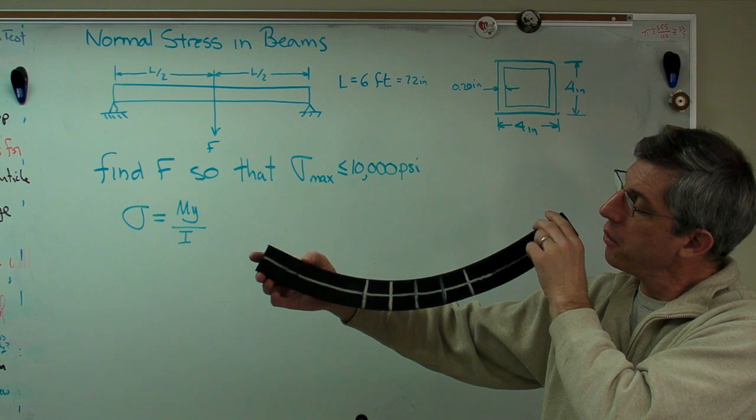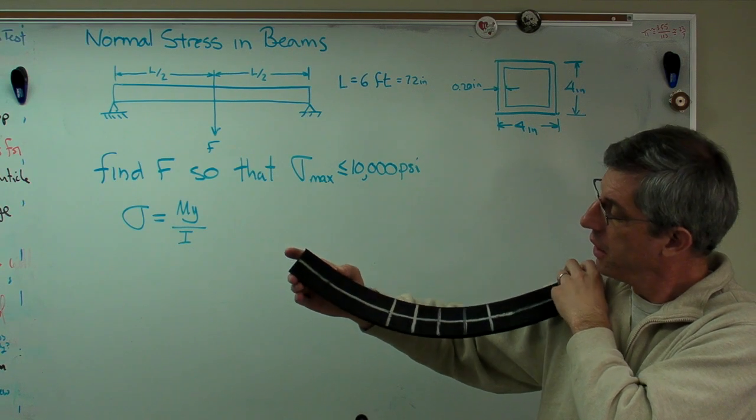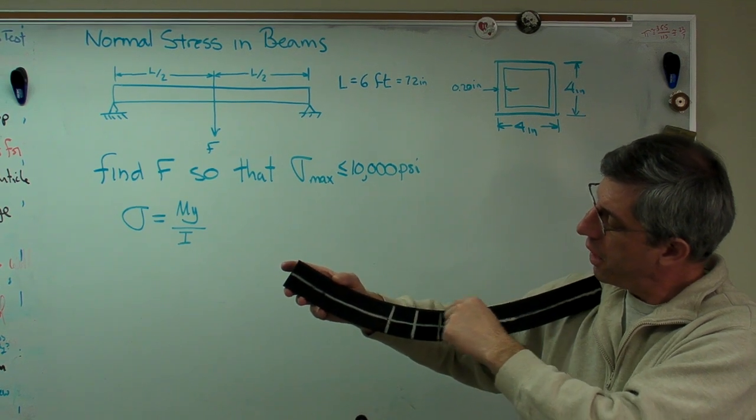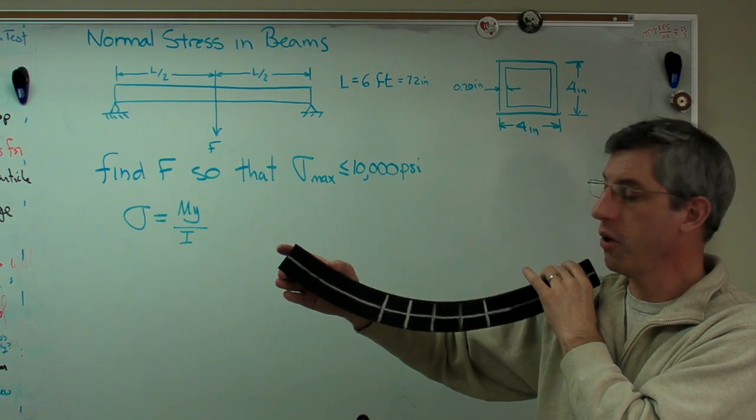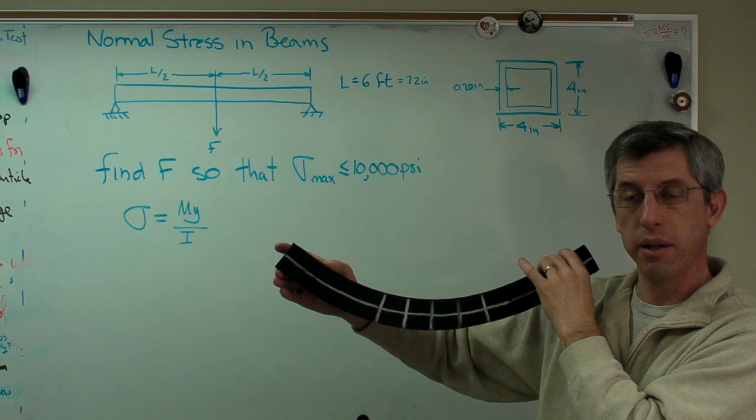If I put it in positive curvature, the exact opposite happens. The top gets closer together, those lines get closer together and those lines get farther apart. So the top is in compression and the bottom is in tension.